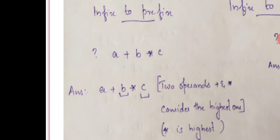Operators have priorities. If we have two operators — plus and star — star has higher priority than plus. If there is no difference in priority, we evaluate left to right. For example, with b star c, the star operator is performed first.